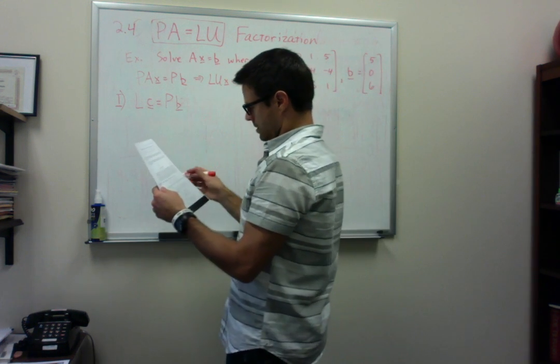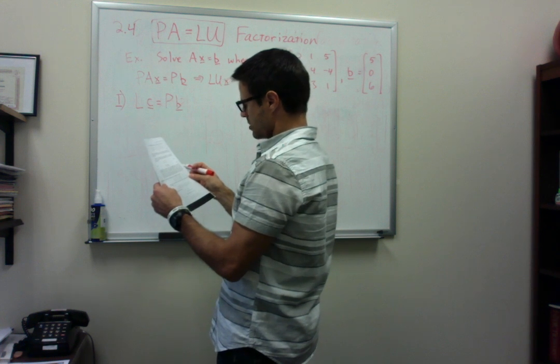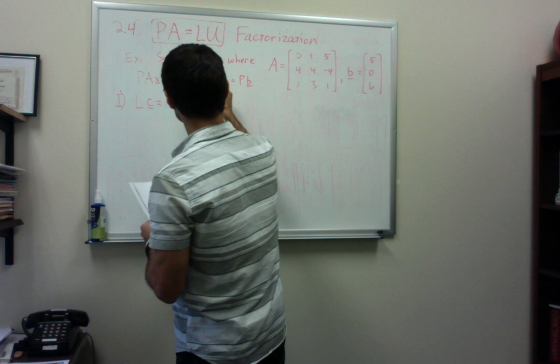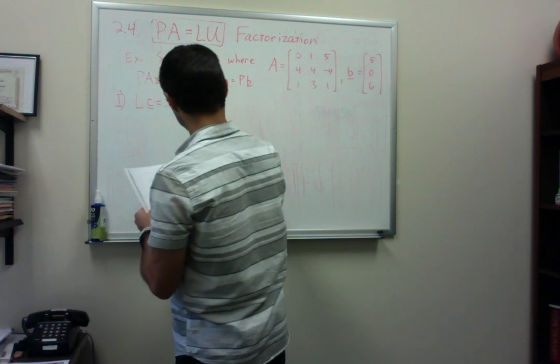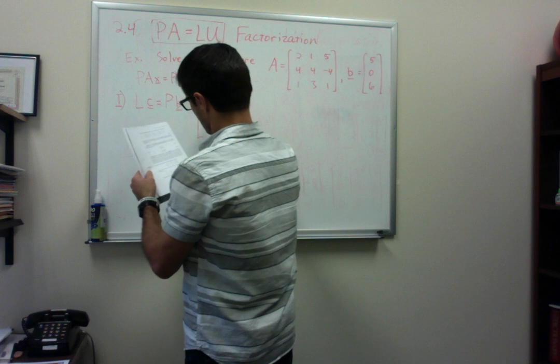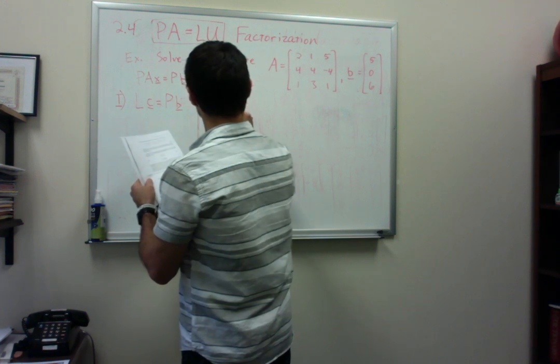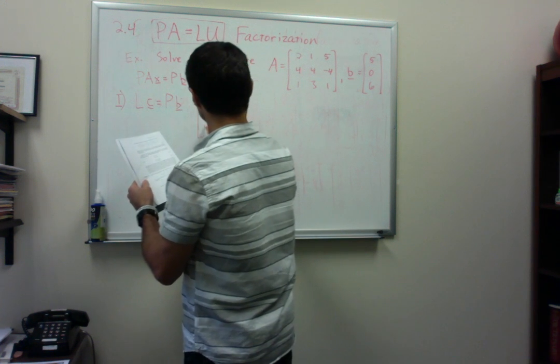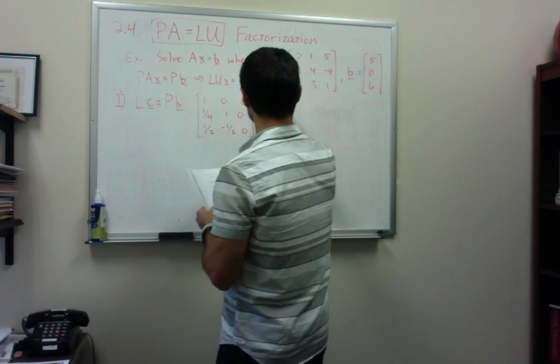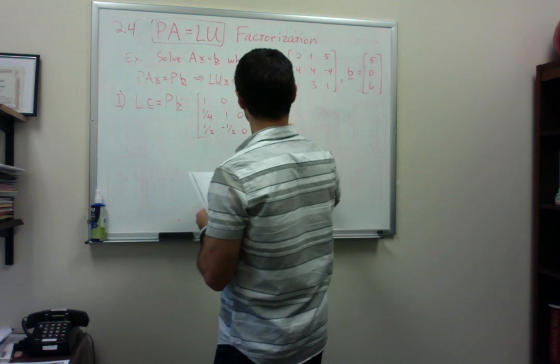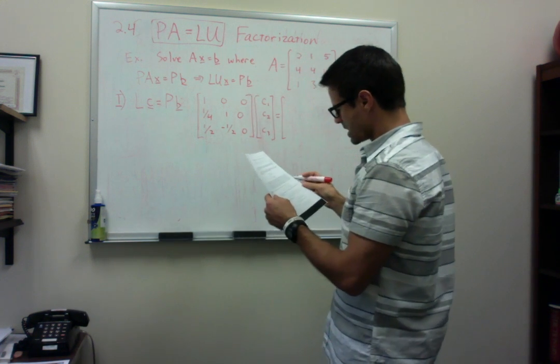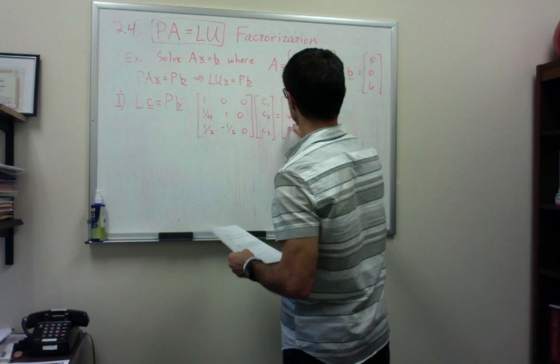And now we solve, so this system now becomes... L from the previous video was the following: one, zero, zero, one-fourth, one, zero, one-half, minus one-half, zero. C is unknown, and our P times B is the vector zero, six, five.